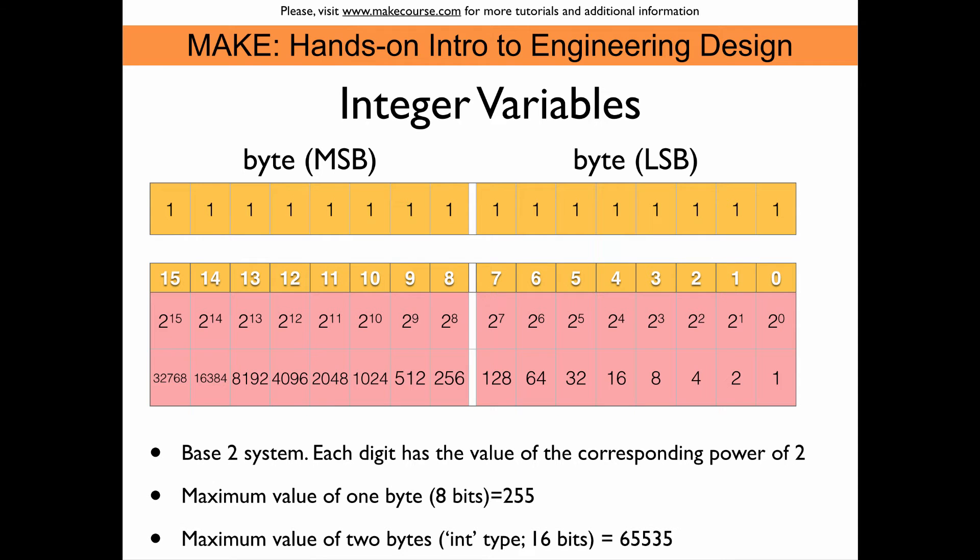Let's see what this means for integer variables. If you define an integer variable in an Arduino sketch, you get 16 bits that you can fill with 1s and 0s. They are shown here. And so the first 8 bits are called the least significant byte, and the remaining 8 bits at the upper end of the number. They are called the most significant byte, because they contain larger numbers.